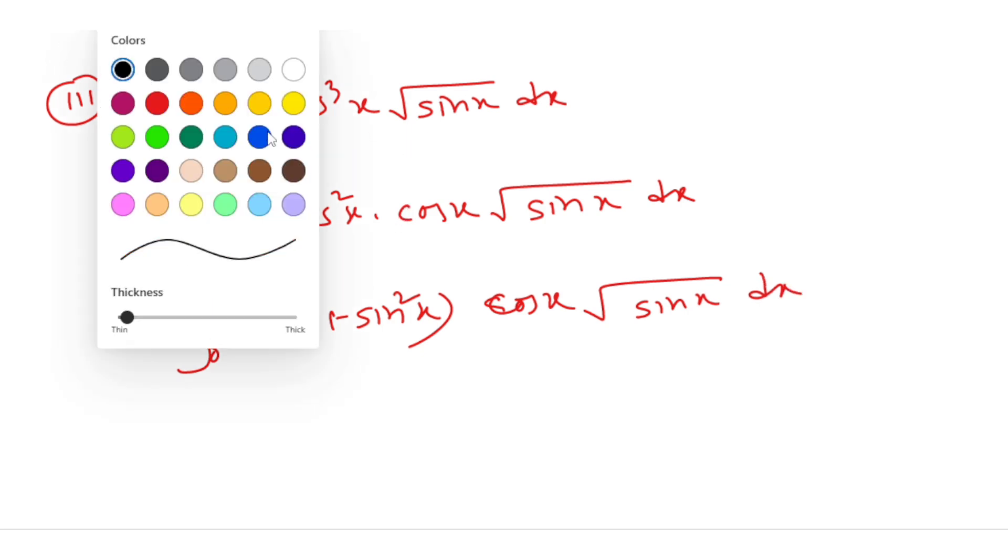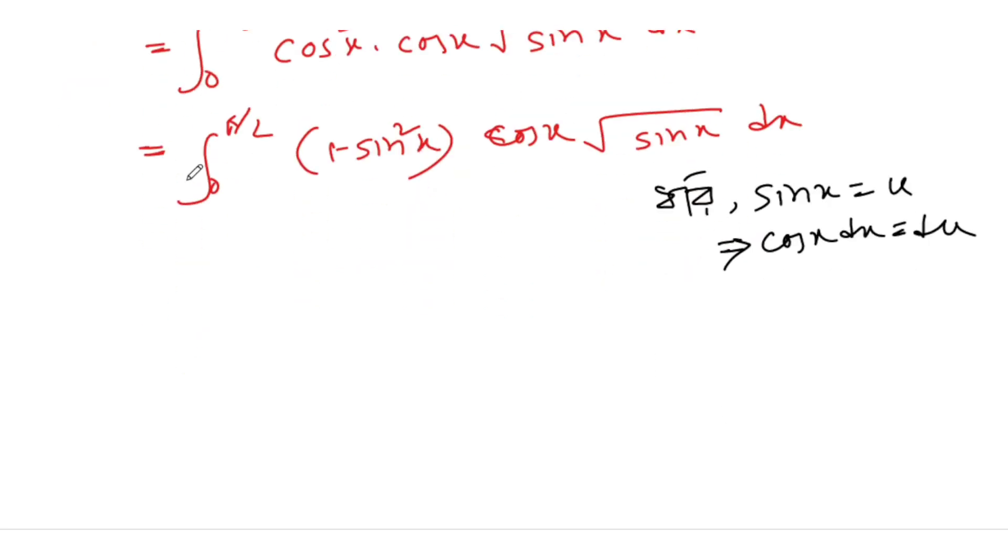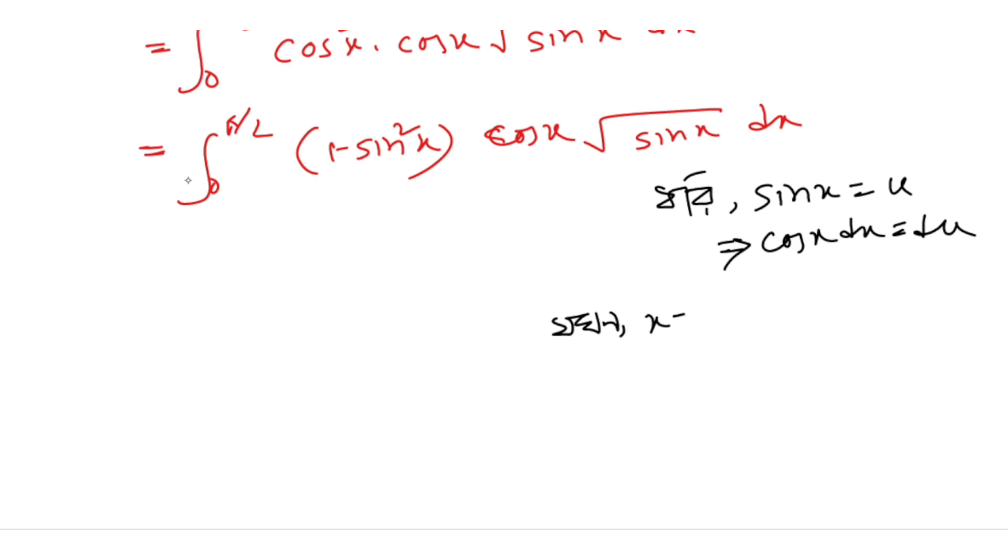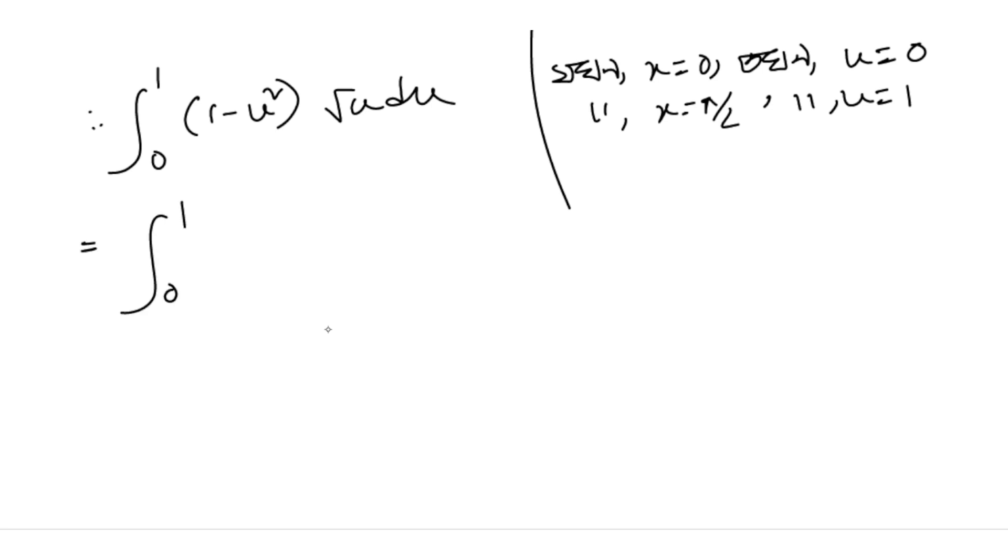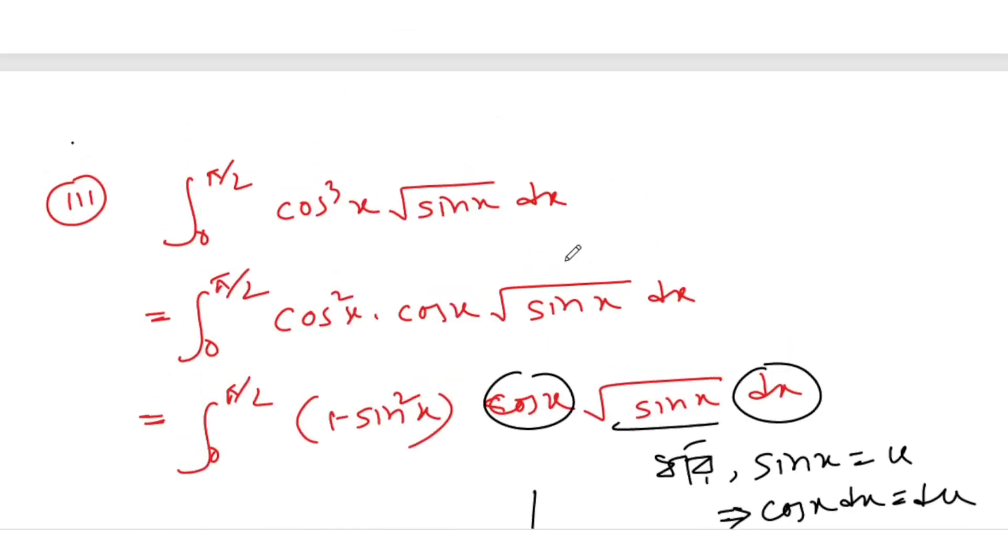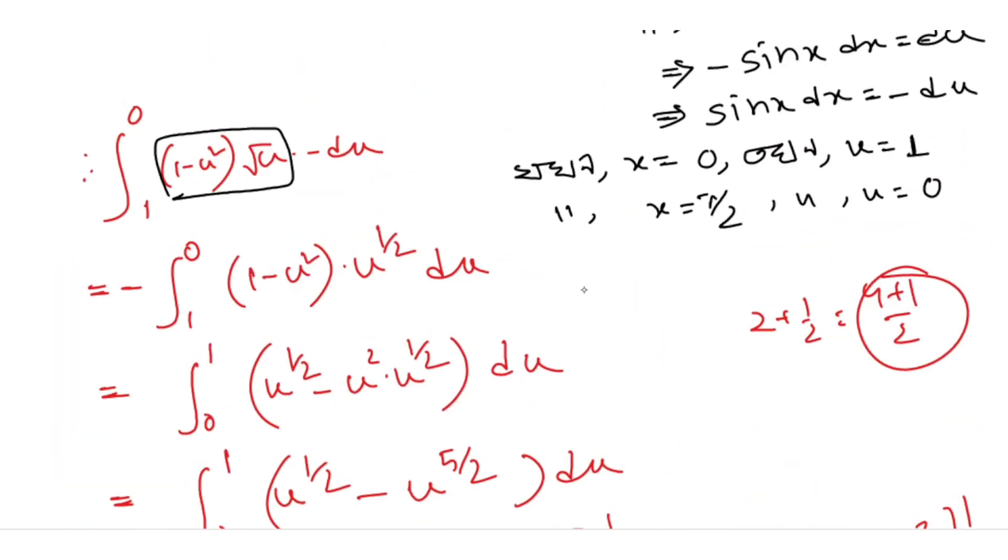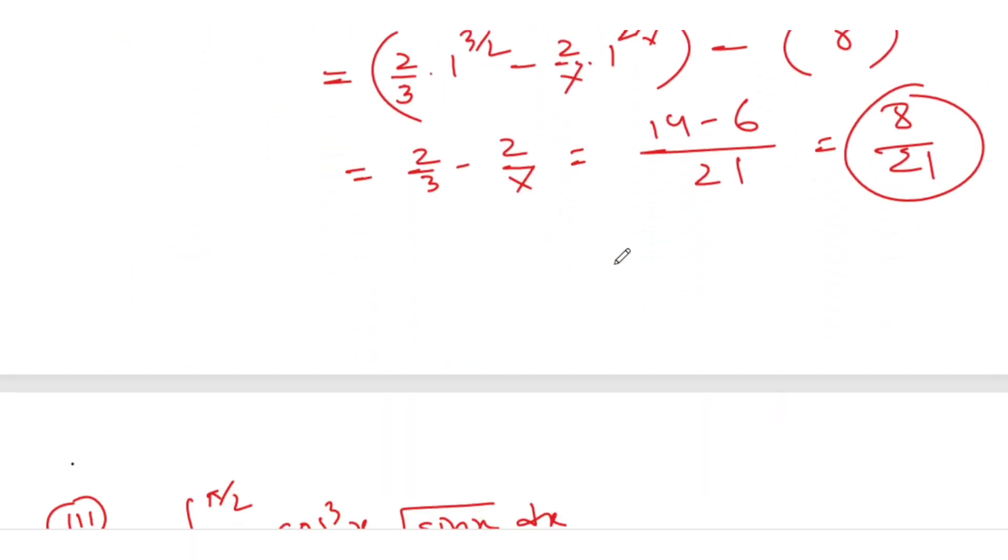Let sin x equal u, then cos x dx equals du. When x equals 0, u equals 0. When x equals π/2, u equals 1. The integral becomes integral from 0 to 1 of (1 minus u squared) over root u du. This is the same calculation as before.